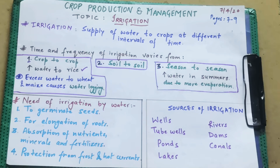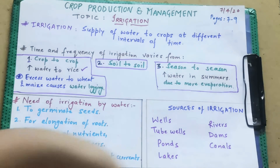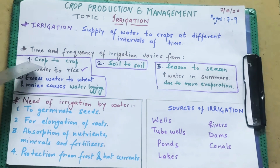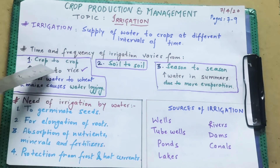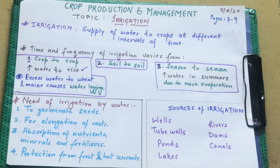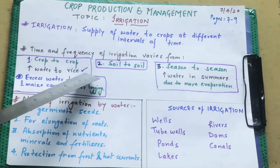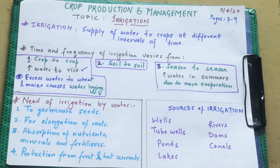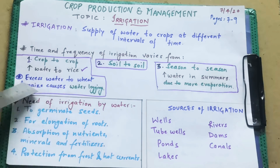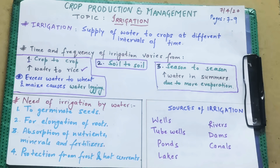The fixed time and interval depends on some main factors. First, it depends on crop to crop — meaning one type of crop will not need the same watering schedule as another. For example, the rice plant needs very high water, so it needs more water. But if you give wheat and maize more water, then water logging occurs.